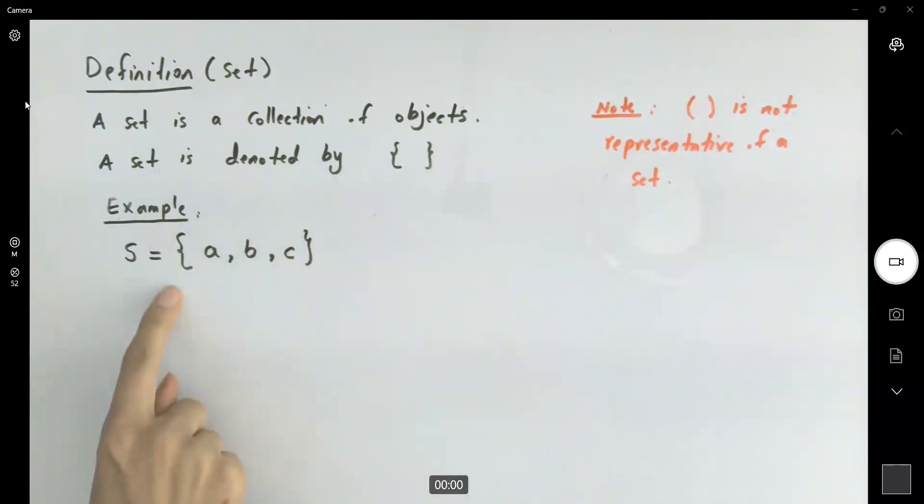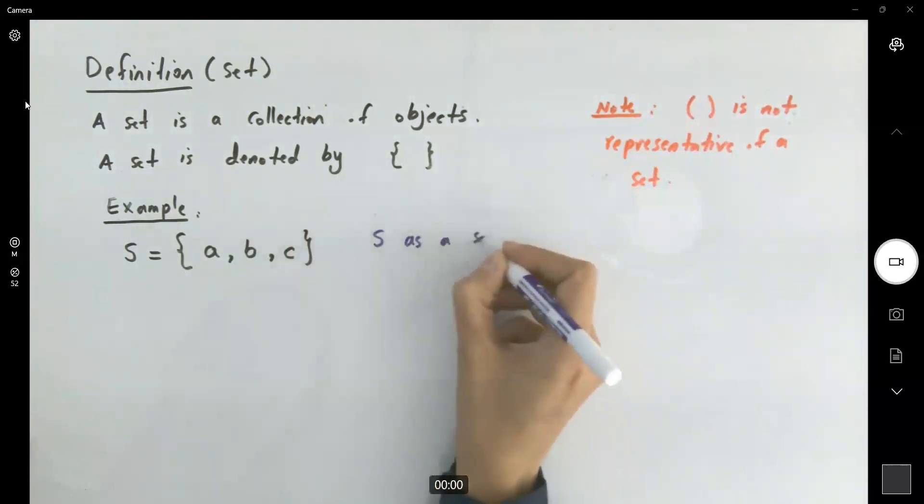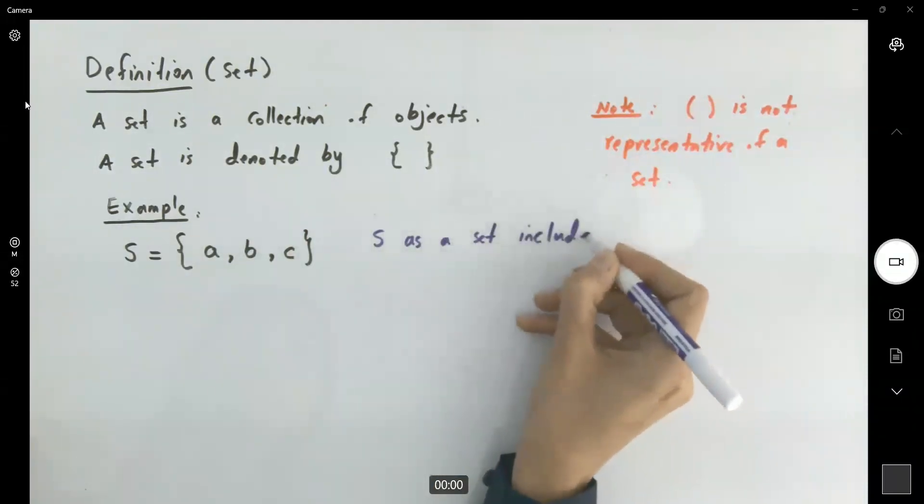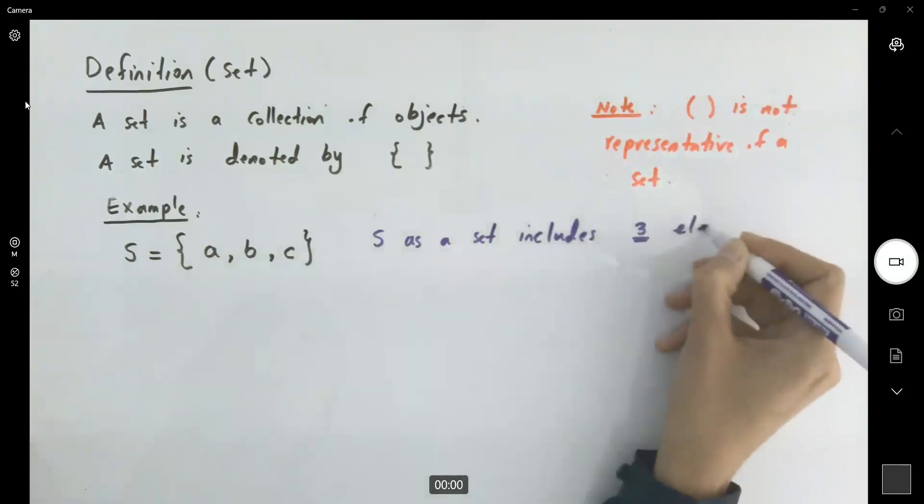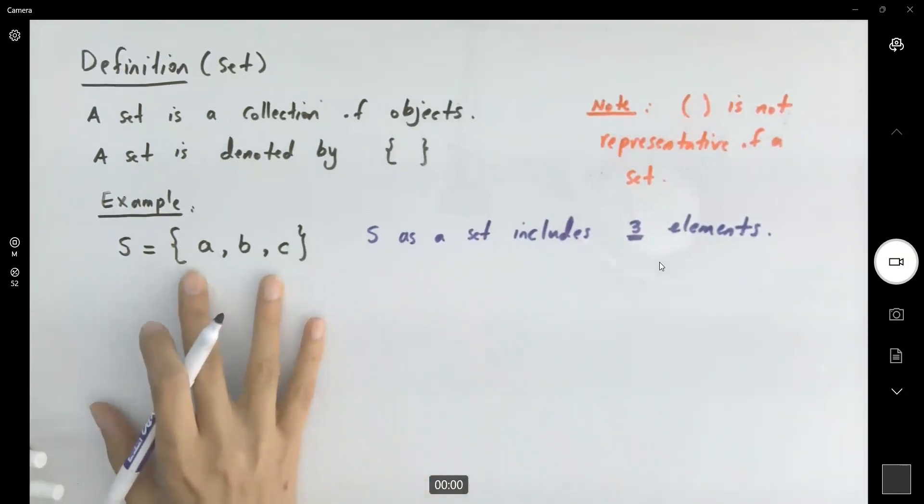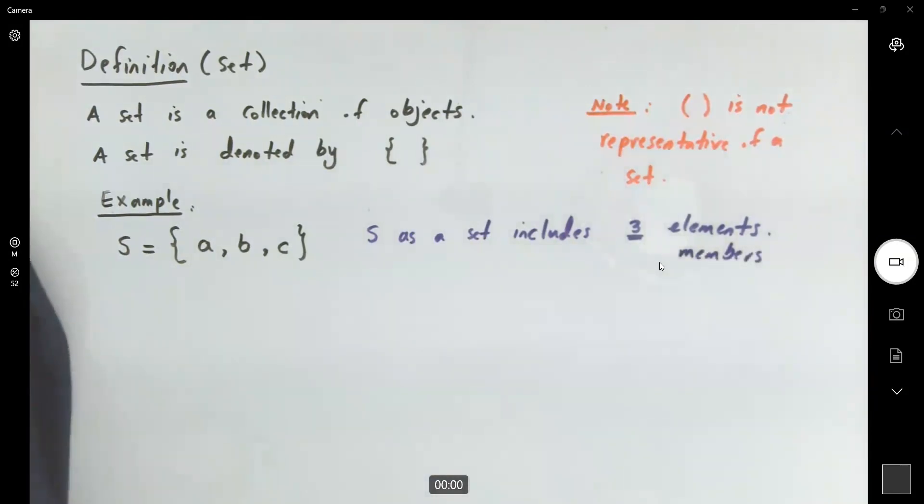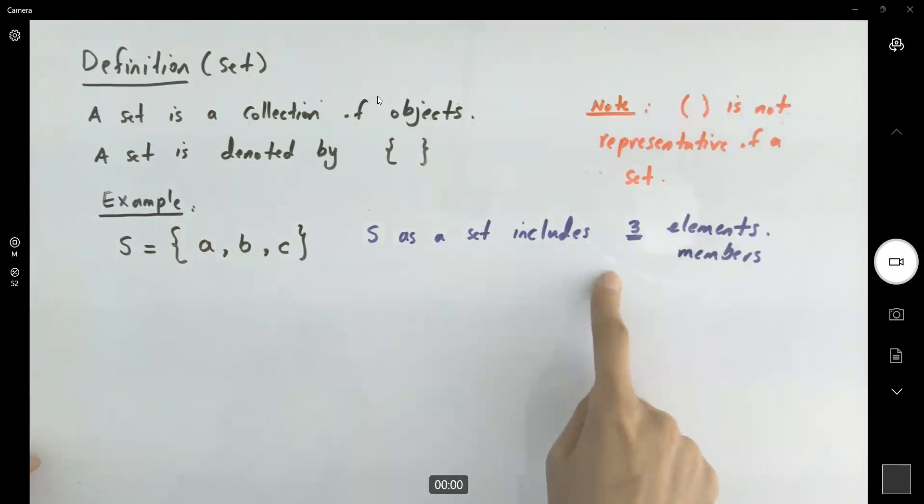The set of S includes three elements. S as a set includes three elements, or it includes three members. These guys are the members of the set. This set has three elements, three members.